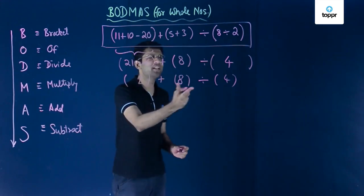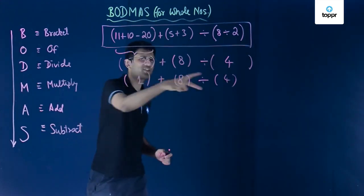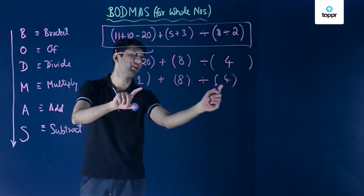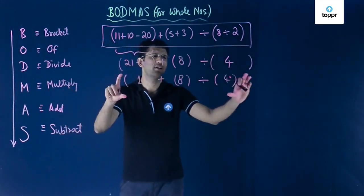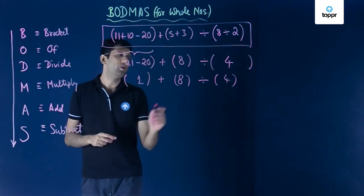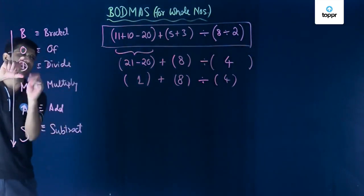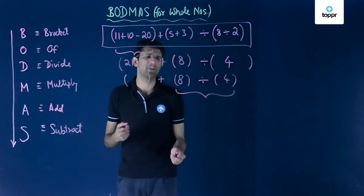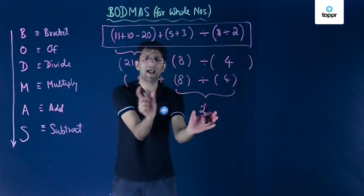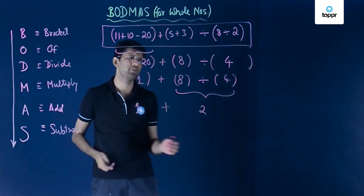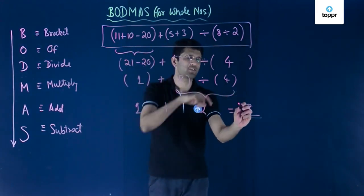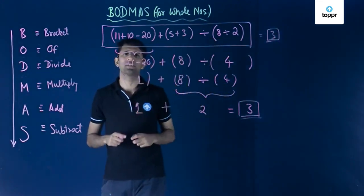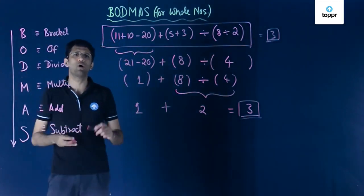We now have 1 plus 8 divided by 4. Since division has higher precedence than addition, we first perform 8 divided by 4, which equals 2. Then we add: 1 plus 2 equals 3. So the value of this entire expression is 3. If you do not follow the BODMAS method, you are likely to get a different wrong answer, so always follow this method when resolving complicated expressions.